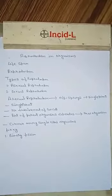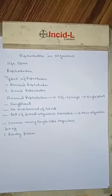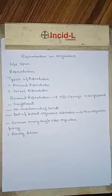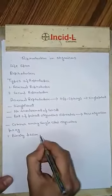By the process of binary fission, amoeba reproduces asexually.